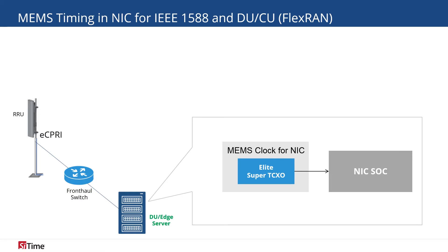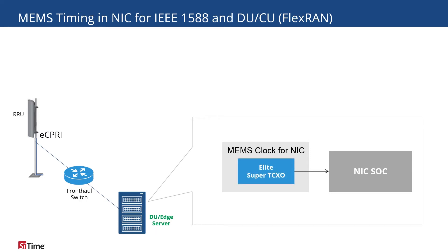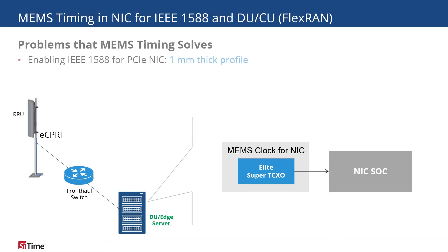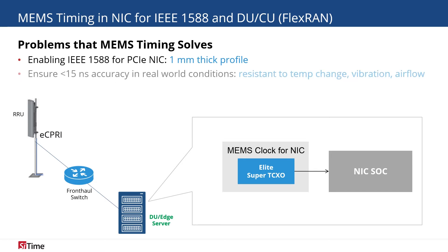Like the front-haul switch, the distributed unit requires precise timing as well. Our Elite TC-XO is the ideal timing reference for the network interface card in the distributed unit. The Elite TC-XO brings form and function with a 1mm-thick profile and industry-leading dynamic stability, ensuring under-15 nanosecond accuracy in real-world conditions.